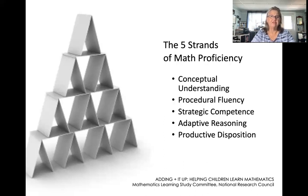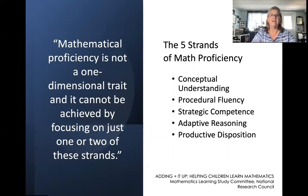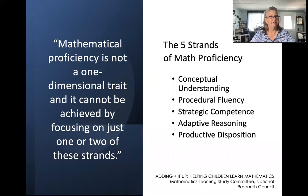Those five strands include conceptual understanding, procedural fluency, strategic competence, adaptive reasoning, and productive disposition. What they said is these strands are interwoven and they are interdependent. So focusing on just one or two of the strands will not necessarily result in a child being mathematically proficient.